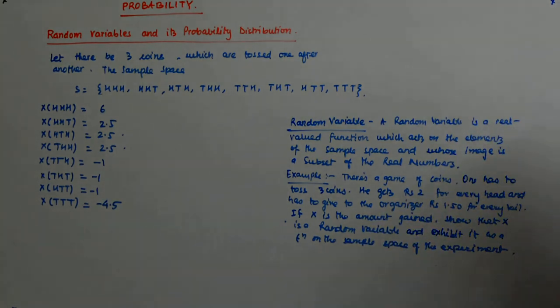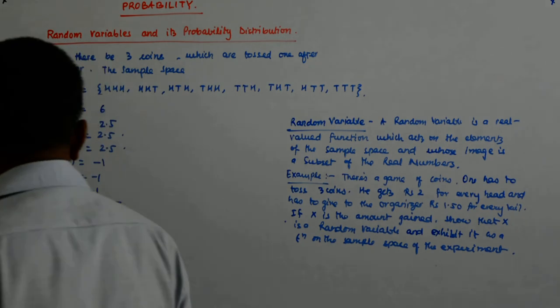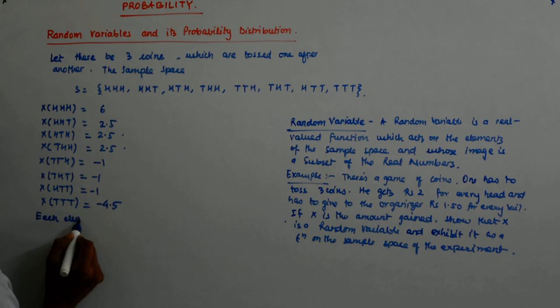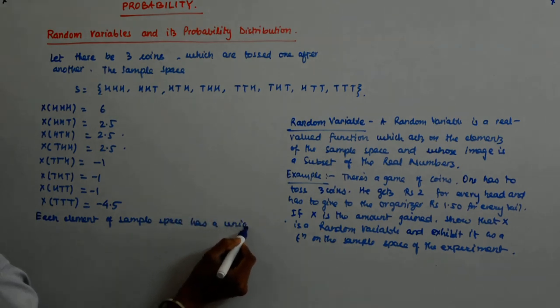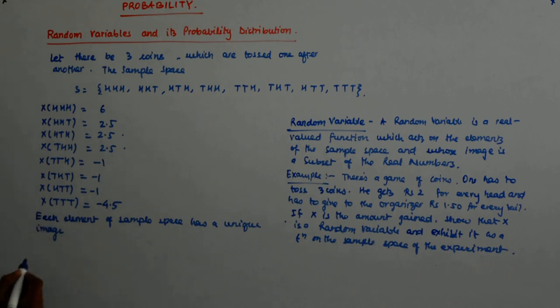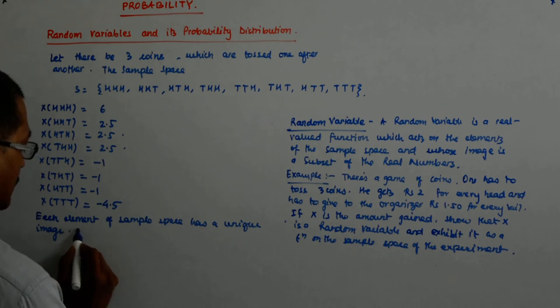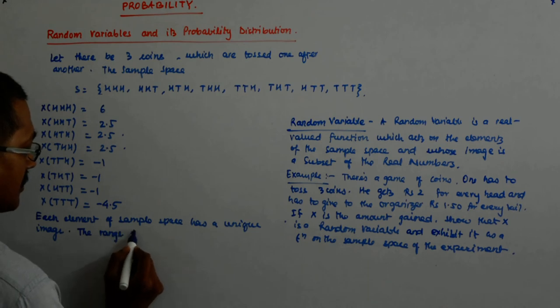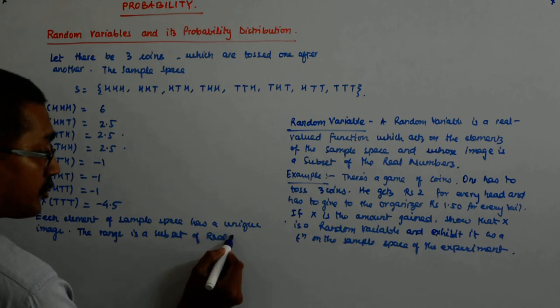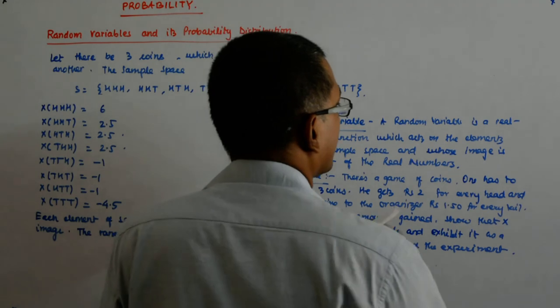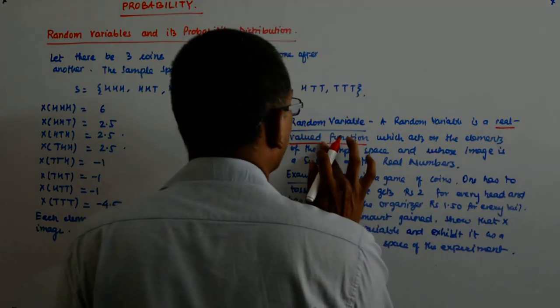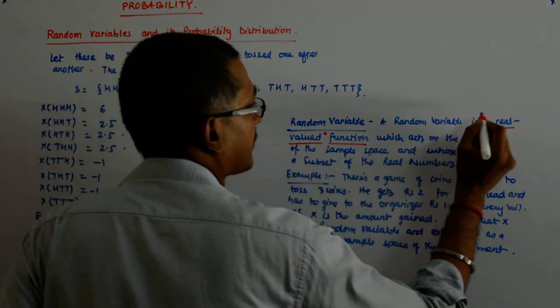Okay, fine. So, we understand. So, you will have to write why it is a random variable. Each element of sample space has a unique image, and the range is a subset of real numbers. This you should write in words, real numbers. Because these two things are very, very important. It is a real-valued function, real-valued and it is a function. Two things. First of all, it should be a function and it should be real-valued.